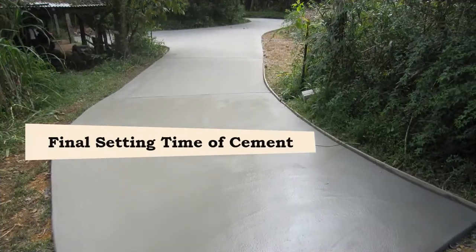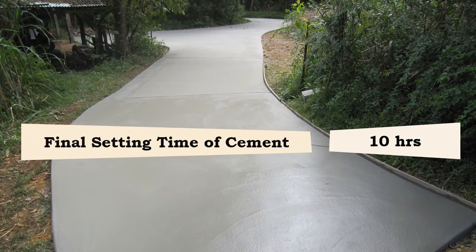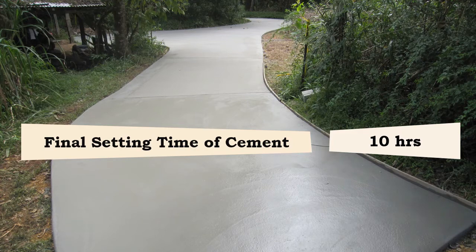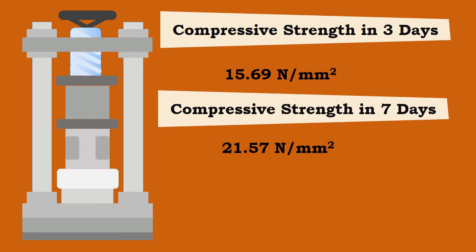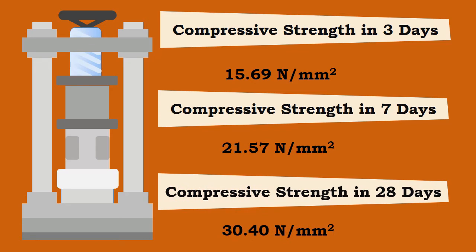The compressive strength of this cement after three days is 15.69 newton per millimeters square, after seven days is 21.57 newton per millimeters square, and after 28 days is 30.40 newton per millimeters square.